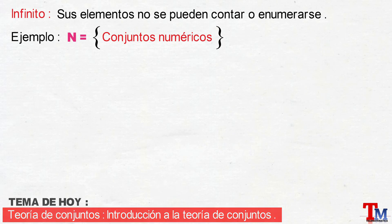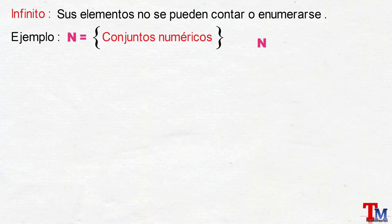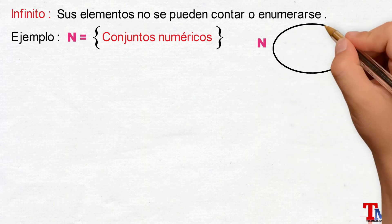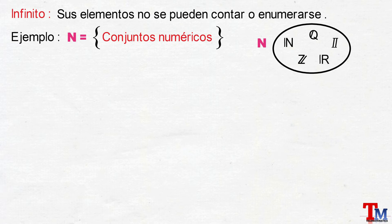Y que gráficamente sería el conjunto N, que se define, por ejemplo, por el conjunto de los números naturales, o por el conjunto de los números racionales, o por el conjunto de los números irracionales, o por el conjunto de los números reales, como algunos de los ejemplos.